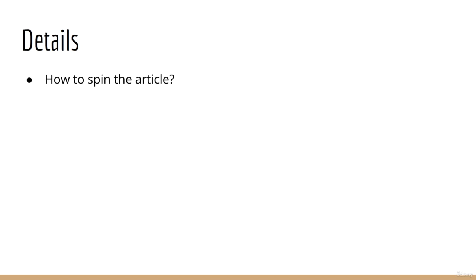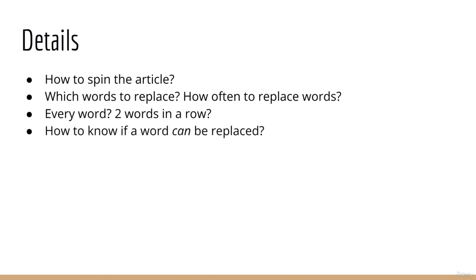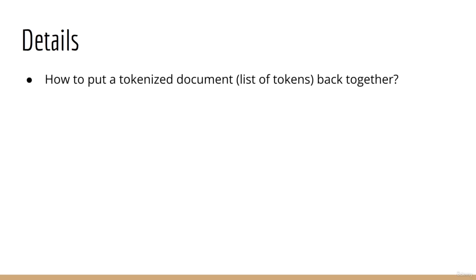Once you have your model, you'll need to write a function to actually spin the article. You'll need to figure out which words you want to replace and how often to replace them. For example, if you replace every word, the result won't even resemble the original nor will it be likely to make sense. You'll also need to consider whether you want to ever replace two words in a row. Furthermore, you'll want to think about how to check whether a word can be replaced — for some words there simply may not be any other options since the trigram is unique.